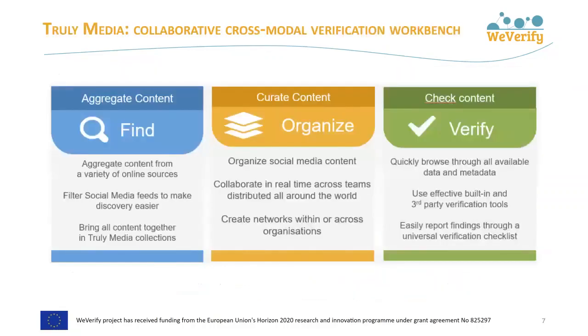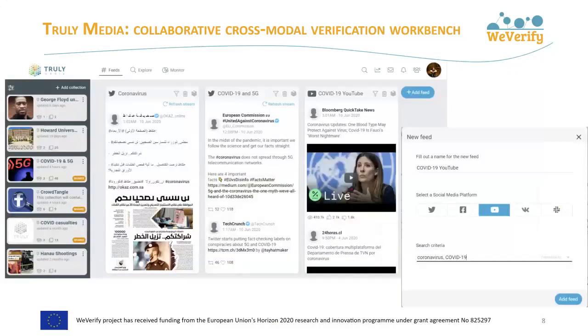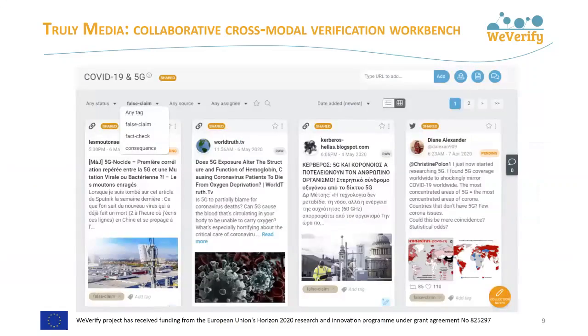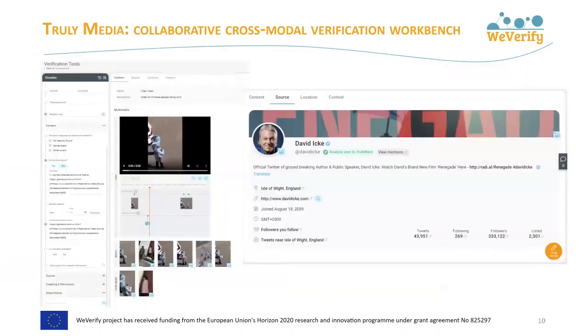TrulyMedia helps journalists work together in investigations and is closely connected to TruthNest, which provides detailed analytics on single posts. TrulyMedia operates in three steps: Find, Organize, and Verify. In the first step, users set up the sources and queries they need to monitor. In the second, they set up the collaborative workspace around a particular investigation to gather and organize relevant content. In the third, they analyze the content with the help of a variety of internal or third-party tools.